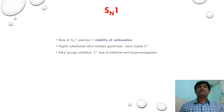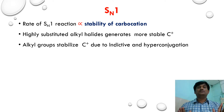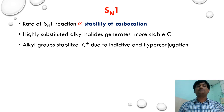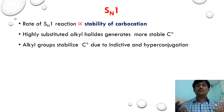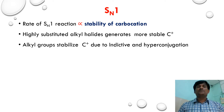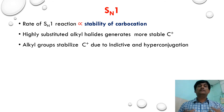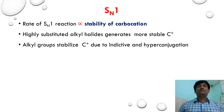In an SN1 reaction, the rate is directly proportional to the stability of the carbocation — as stability increases, the rate increases. The stability of carbocation increases as the number of alkyl groups increases, because alkyl groups are electron-releasing groups. They release electrons to the carbocation center and decrease the positive charge, increasing stability via inductive effect and hyperconjugation.